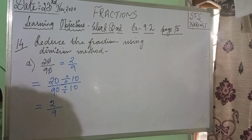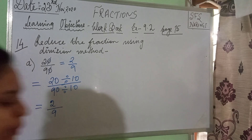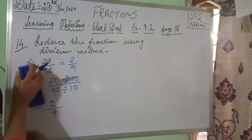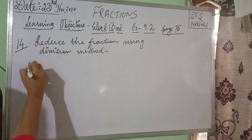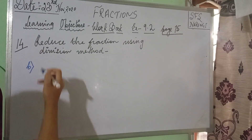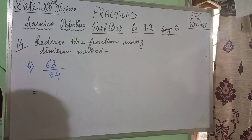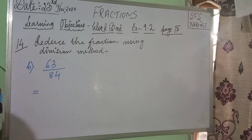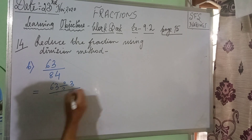I taught you the shortcut as well. That was question number 14a. In question number 14b, you have 63 by 84. Now, children, 63 and 84 are both divisible by 3.